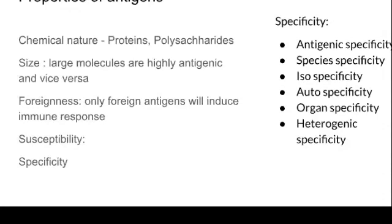Properties of antigen: first, chemical nature — antibody production depends on the chemical nature of the antigen; proteins and polysaccharides are the common chemical natures present in antigens. Second, size — the larger the molecule, the higher the antibody production; if the size is small, production will be less. Third, foreignness — only foreign antigens will induce immune response; if the body has already been exposed to that antigen, the antibody response will not be as effective.